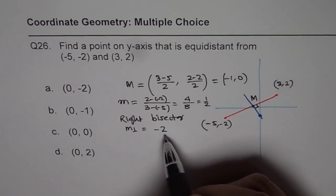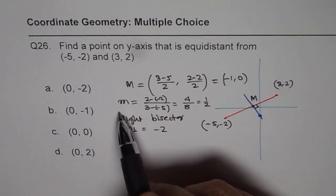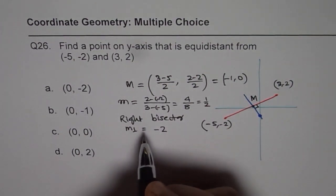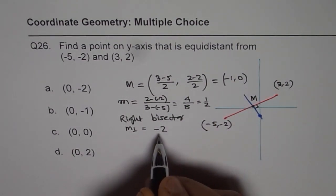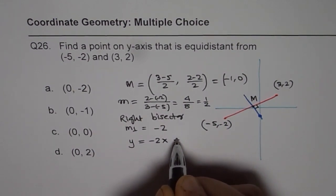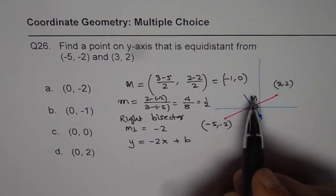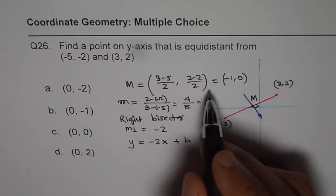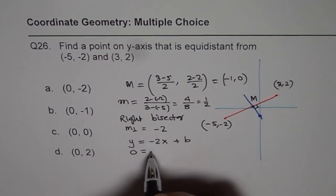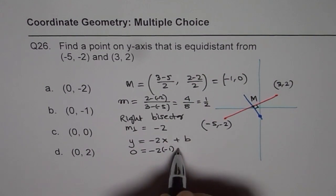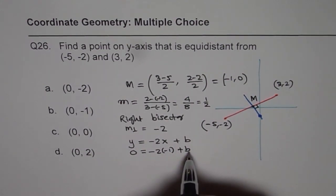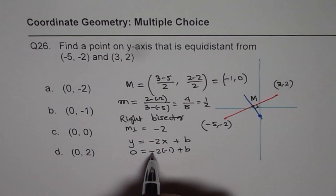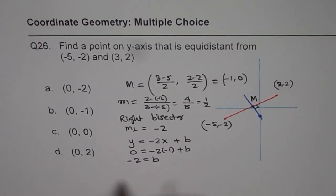We need to find the y-intercept. That is the point on the y-axis. So we can write down the equation in the form y = mx + b, as y = -2x + b. And since we know that the midpoint m is (-1, 0), we'll substitute -1 for x and 0 for y. So 0 = -2(-1) + b. And that gives us the value of b. From here, this is plus 2, and we get -2 equals b.